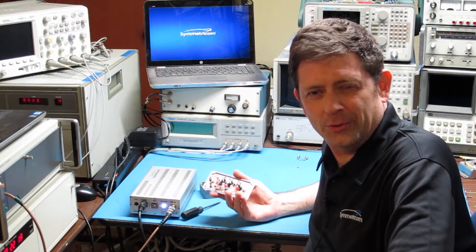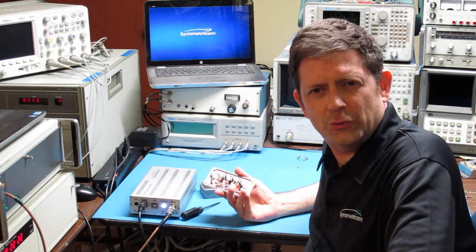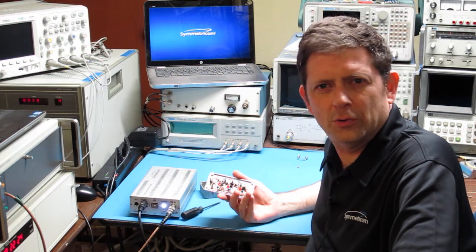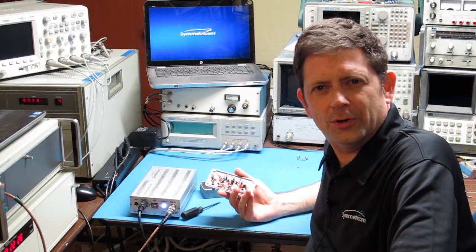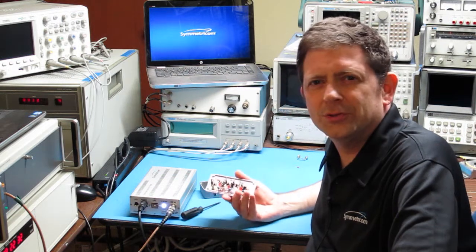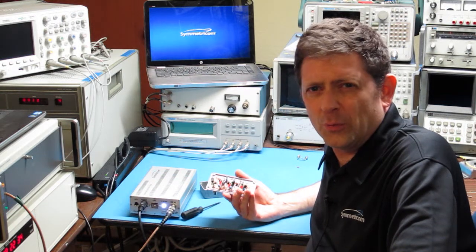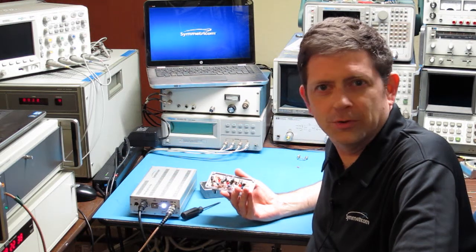Most of our other demos have emphasized the use of the 3120A to measure the short-term noise and long-term stability of an oscillator or a frequency standard of some kind, so I thought I'd take a few minutes to show you a different application. You can use the 3120A to measure the stability of two-port devices, not just signal sources.